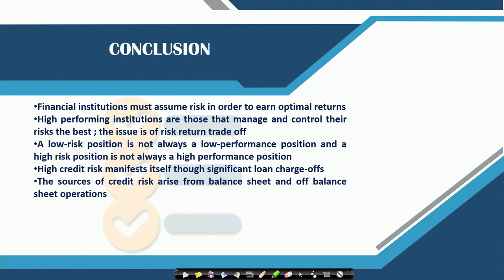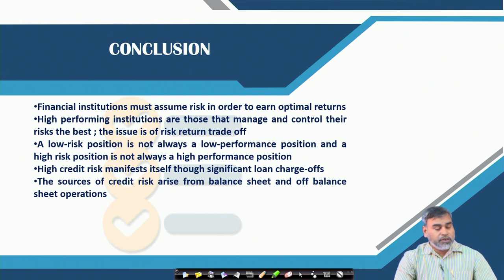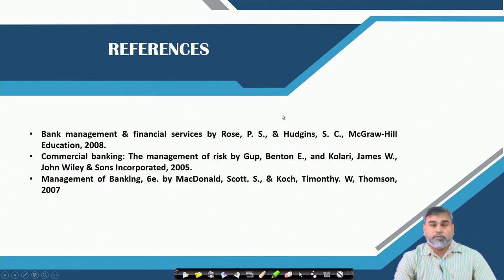Financial institutions must assume risk in order to earn optimal returns. High-performing institutions are those that manage and control risk the best. The issue is the risk-return trade-off — a low risk position is not always a low performance position and a high risk position is not always a high performance position. High credit risk manifests itself through significant loan charge-offs. The sources of credit risk arise from both balance sheet and off-balance sheet operations of the commercial bank.